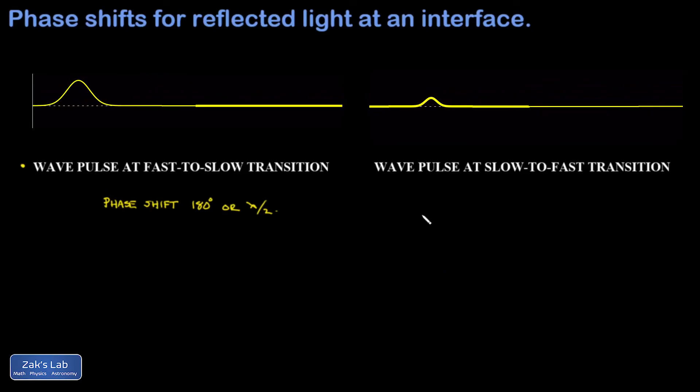So we say the reflected light has not been phase shifted. So now we understand which reflections cause a phase shift and which ones don't. When light transitions from fast to slow you'll see a phase shift in the reflection. When it transitions from a slower material to a faster material there won't be a phase shift in reflection.